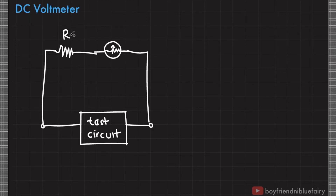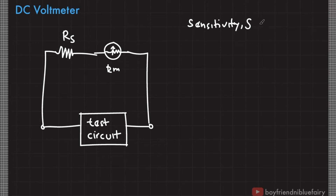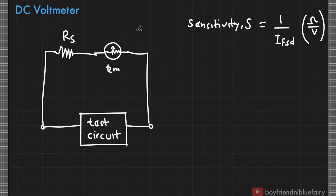We call this R_s the multiplier resistance. Before we derive an expression for R_s in terms of R_m, let's define what we call sensitivity, represented by S. In voltmeter design, sensitivity equals 1 over the maximum deflection current of the galvanometer. Since this is 1 over ampere, it can also have a unit of ohms per volt. By the way, the sensitivity of an ammeter is often measured in micro-amps per millimeter — just a trivia.